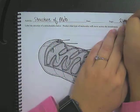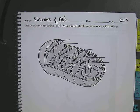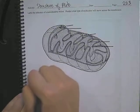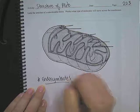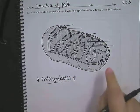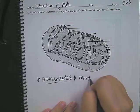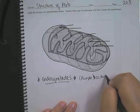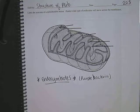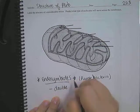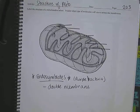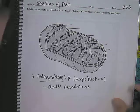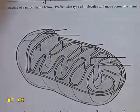Before we do that, I'm going to remind you of a couple of things about the mitochondria itself. Remember that the mitochondria is one of those endosymbiotes — it is believed to be similar to purple bacteria. The evidence for the endosymbiotic theory includes the double membrane, its own DNA, and the fact that it divides by binary fission. All of that we learned back at the beginning of unit two.